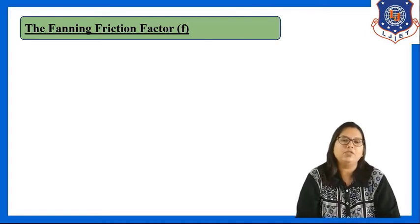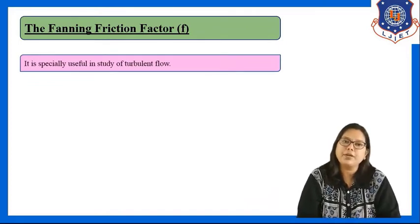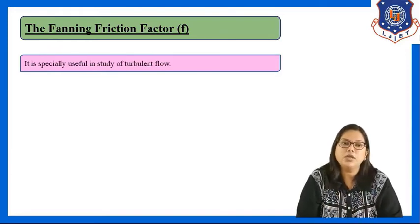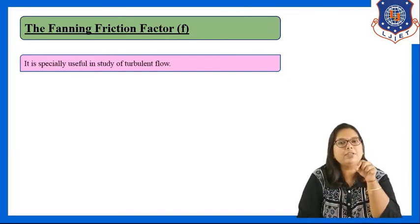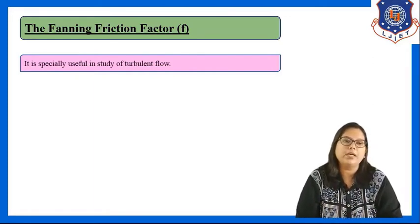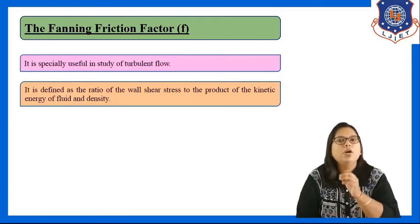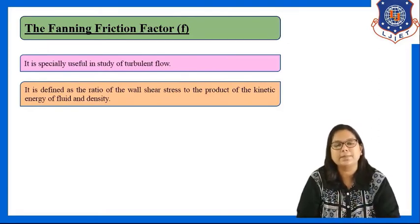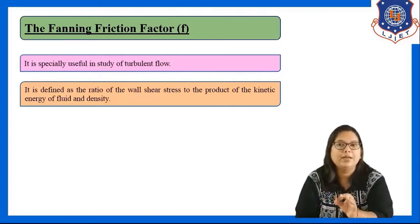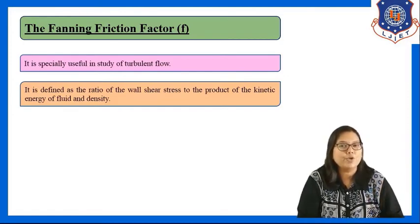The fanning friction factor, denoted by small f, is specially useful in the study of turbulent flow only. The equation derived here is only used for turbulent flow — never for laminar flow. It is defined as the ratio of wall shear stress tau_w to the product of kinetic energy u²/2 and density rho.